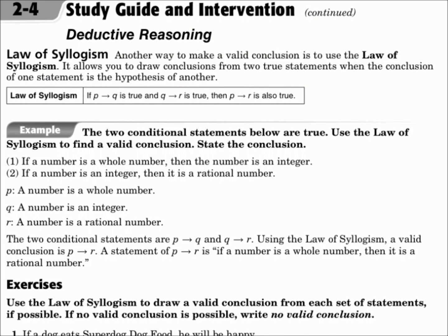Law of syllogism. In the law of syllogism, P goes to Q, and Q goes to R. So then P goes to R. It's sort of like the transitive property, where A equals B and B equals C, so A equals C.